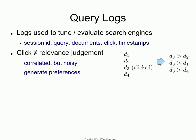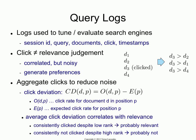The goal is to take these preferences and do something with them — either convert them into something that looks like relevance judgments, or build an evaluation metric that looks directly at these preferences. The way you convert them is by looking at something called click deviation. Click deviation is an approximation for relevance. You measure two quantities: the click rate for a particular document D in position P in the ranking, and then the expected click rate for position P in the ranking.